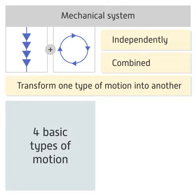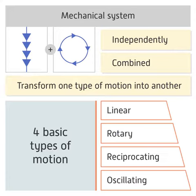The four basic types of motion in mechanical systems are linear, rotary, reciprocating and oscillating. Let's look at each one in turn.